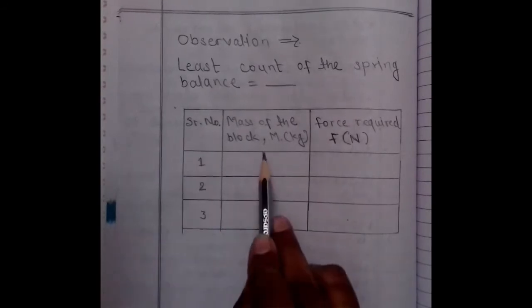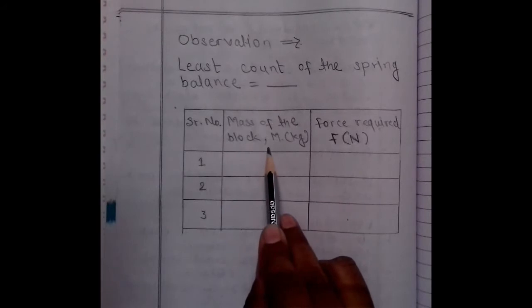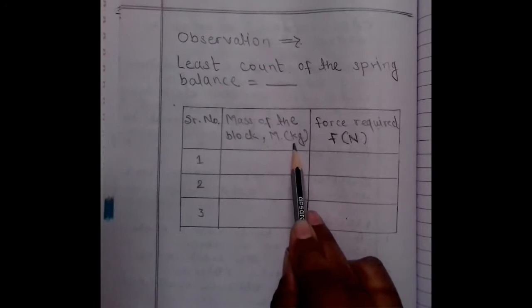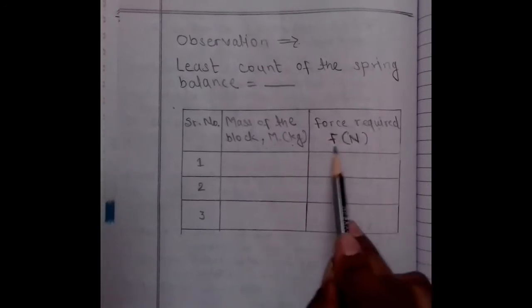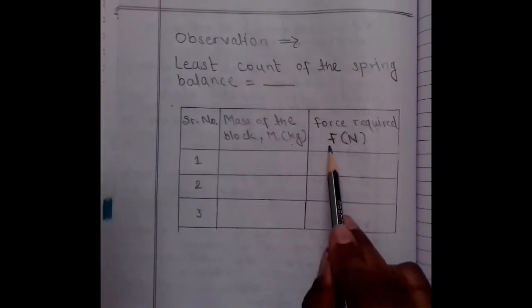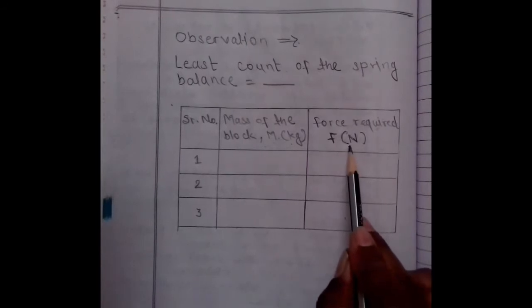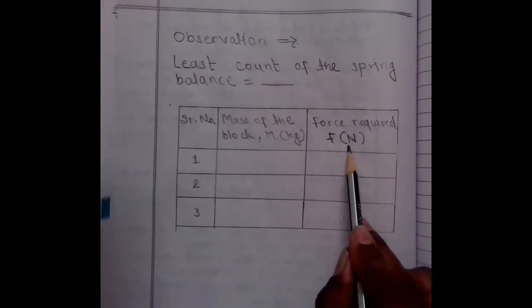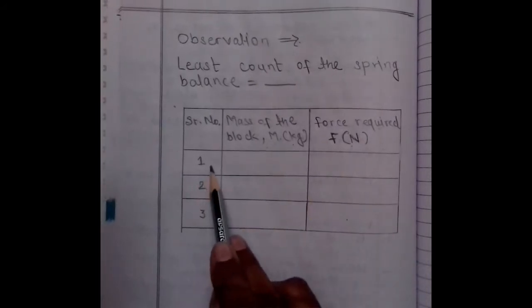Serial number. Mass of the block, which we represent by capital M. It is in kilogram. Force required, which we represent by capital F. And unit for that is Newton. You have to take at least three observations.